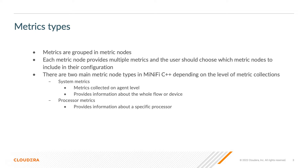There are also different metric types. Metrics are grouped in metric nodes, which means that each metric node provides multiple metrics and the user should choose which metrics should be exposed to Prometheus when creating their configuration. There are two main metric types in MiniFi C++: the system metrics and the processor metrics. The system metrics provide information about the whole flow or the device it's being run on, while the processor metrics provide information about a specific processor.